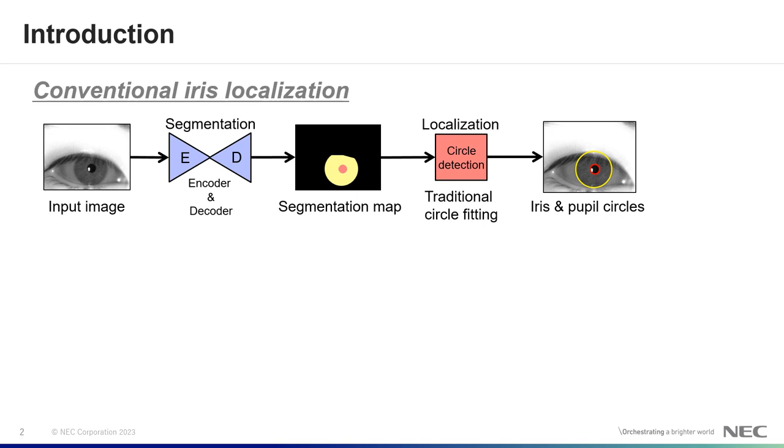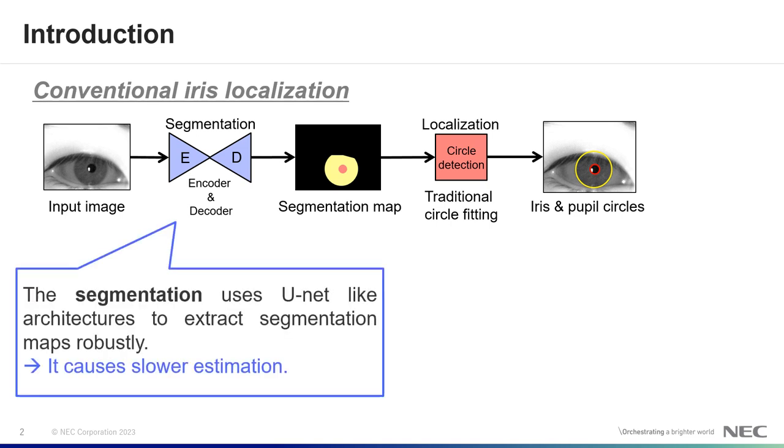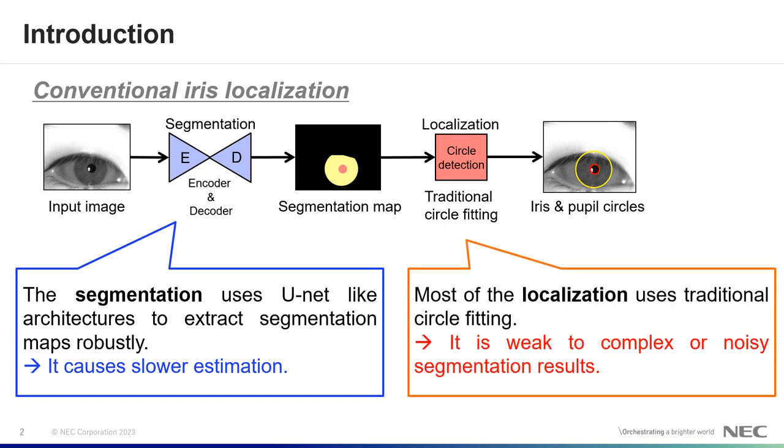These have two areas for improvement. First, the segmentation uses U-net like architectures to extract segmentation maps robustly, but it causes slower estimation. Second, most localization uses traditional circle fitting, so it is weak to complex or noisy segmentation results.